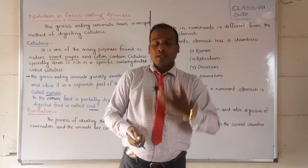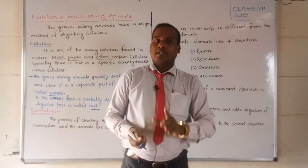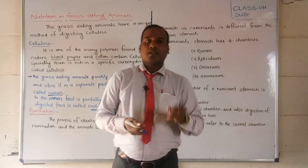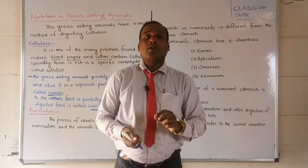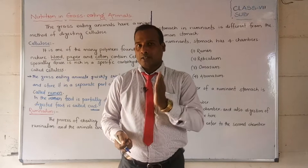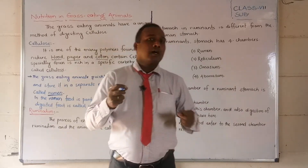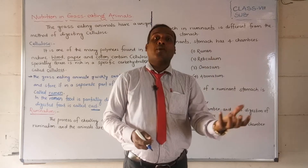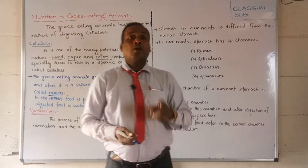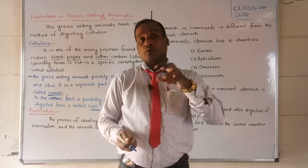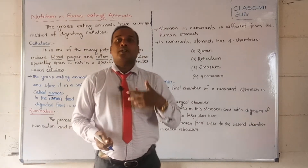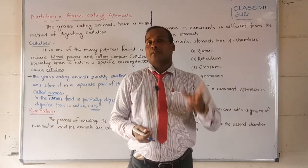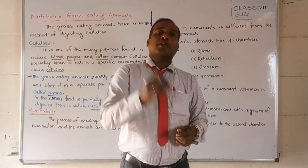The cud comes back to the mouth and the animal chews it. Whenever that food is quickly stored in the rumen and the animal feels safe, it brings the food back to the mouth automatically and chews it. This process is called rumination, and the animals that do this are called ruminants.